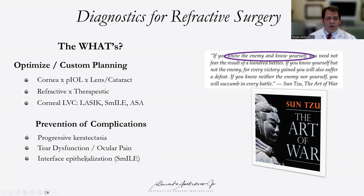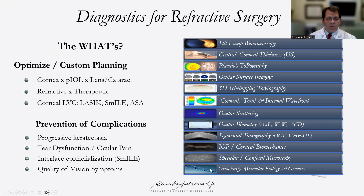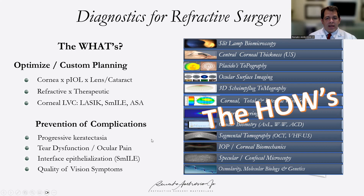All of these complications and planning can be optimized with multimodal imaging, starting from anamnesis, slit lamp, corneal thickness analysis, front surface topography along with ocular surface imaging, Scheimpflug tomography, OCT with segmental tomography, ocular biometry, evaluation of corneal and total corneal aberrations, integrated wavefront and ocular scattering, corneal biomechanics, cell evaluation with confocal and spectral microscopy, and in the future, genetics and molecular biology. Those are the how's.